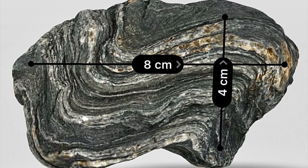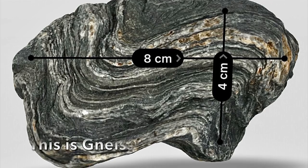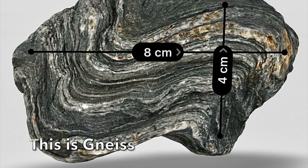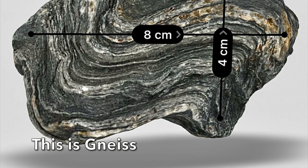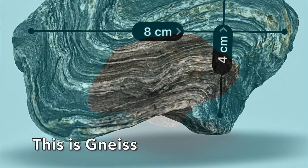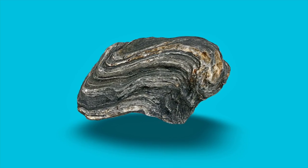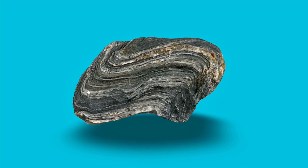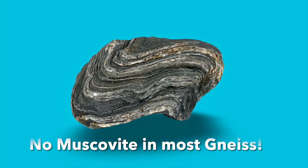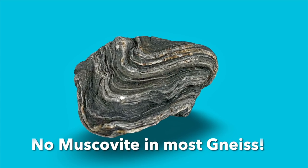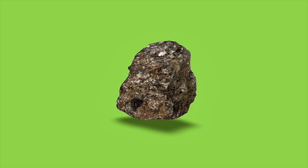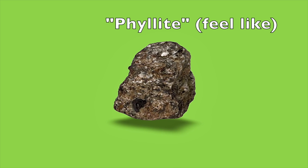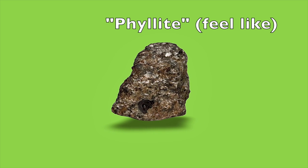Finally, if temperatures and pressures exceed those associated with schist, muscovite becomes unstable and disappears. This next metamorphic stage is marked by the rock called gneiss. Most types of gneiss form without muscovite. Note that gneiss is spelled with a silent letter G. So I hope that with these hints, you now phyllite starting the quiz!